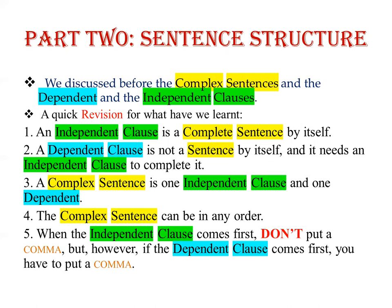If we take an independent clause and add a subordinating conjunction to it, we create a dependent clause. For example, 'I am going to university' is an independent clause. But if I add a subordinating conjunction such as 'when,' 'which,' or 'while,' I create a dependent clause. So 'when I go to university' is now a dependent clause and needs an independent clause to follow it.